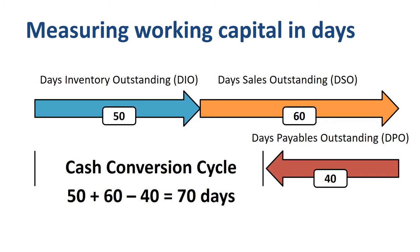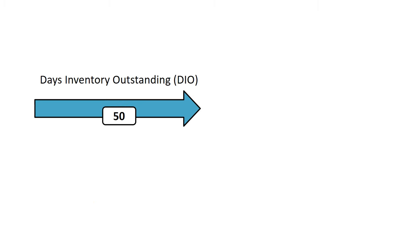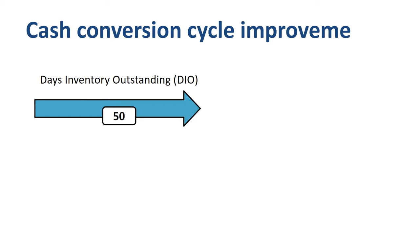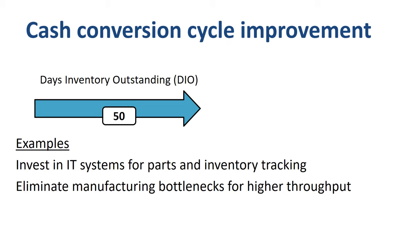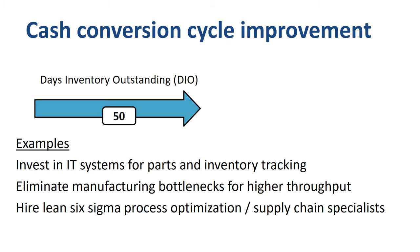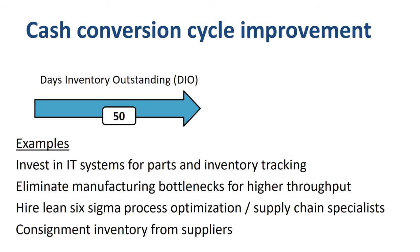How can the company improve? The first area to look at to improve the cash conversion cycle and reduce working capital is inventory. Here are four real-life examples of actions a company can take: invest in IT systems for parts and inventory tracking; eliminate manufacturing bottlenecks for higher throughput; hire Lean Six Sigma process optimization and supply chain specialists; and negotiate consignment inventory from suppliers. All of these can help to bring the days inventory outstanding down.